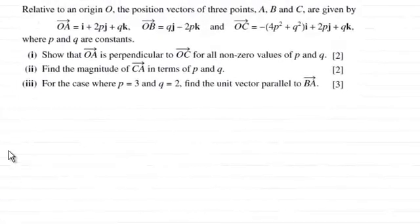Hi there. Now for this question, we're told that relative to an origin O, the position vectors of three points A, B and C are given by OA equaling I plus 2PJ plus QK, OB equals QJ minus 2PK, and the vector OC equals minus all of 4P squared plus Q squared I plus 2PJ plus QK, where P and Q are constants.